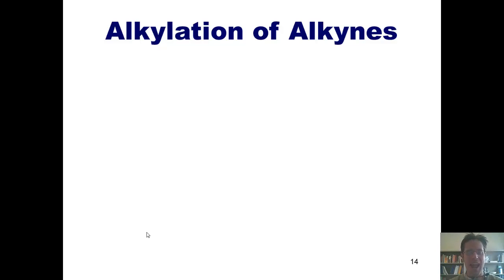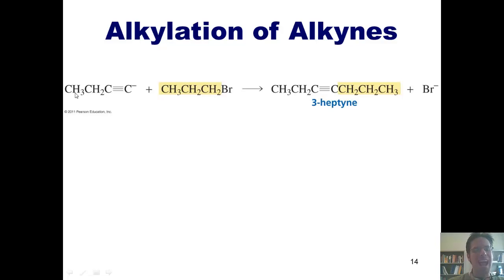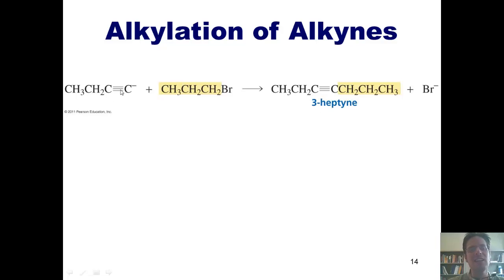Because an alkyne has a reasonable level of acidity, we can do useful reactions with it. If I have an alkyne whose acidic terminal proton has been removed and replaced with a negative charge, I can react that terminal negatively charged alkyne with an alkyl halide, such as an alkyl bromide, and increase the length of that alkyne.